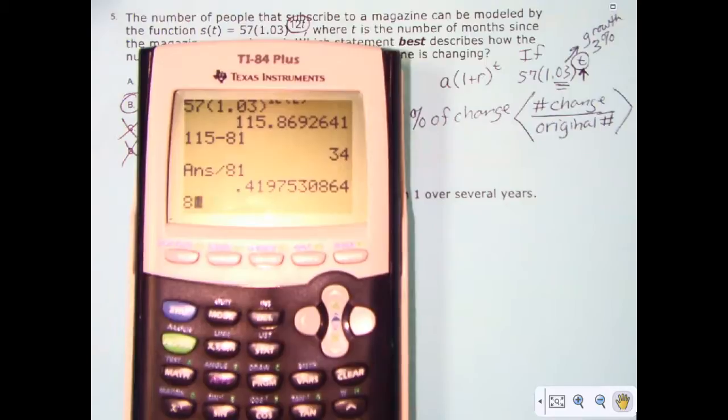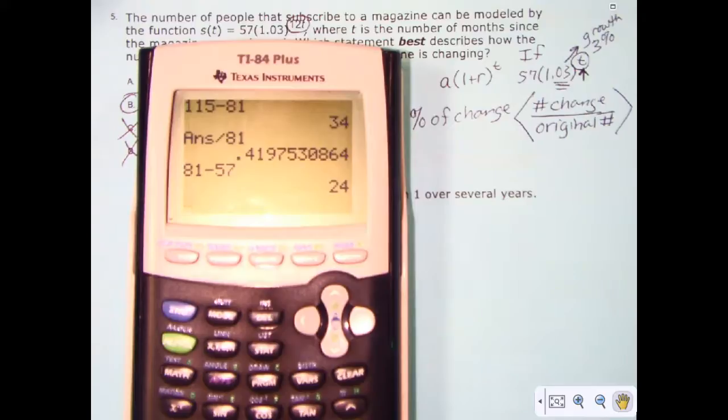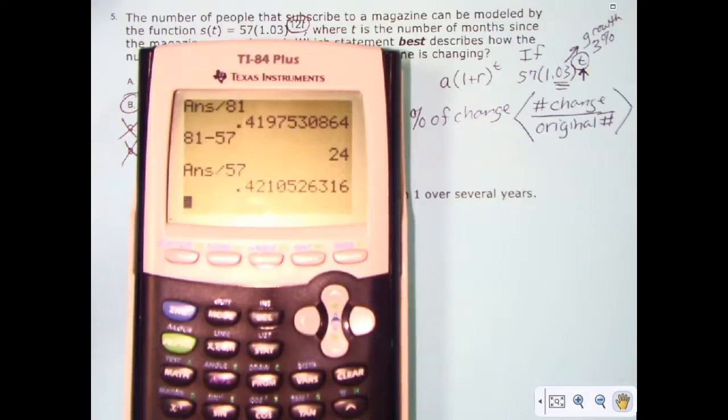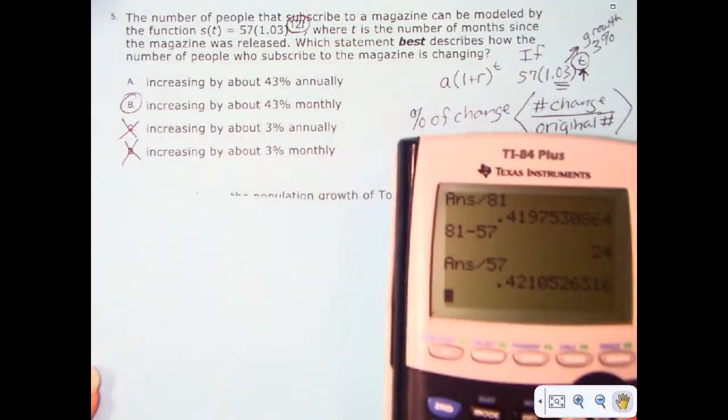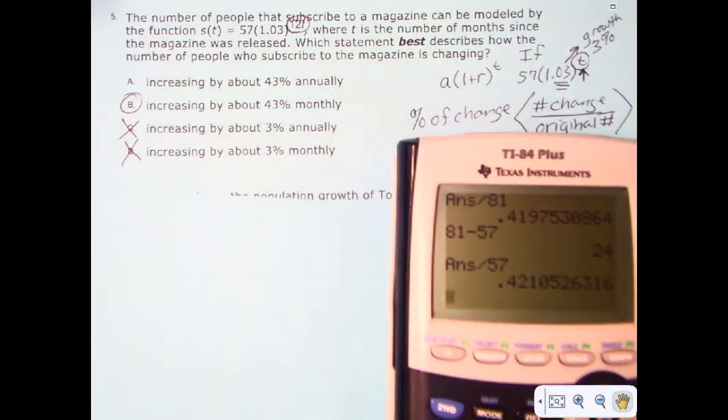If I took the 81 and subtracted the 57, I would get 24. And what did I start with? I started with 57, so I would divide that by 57, and I would get 42 again, because it has an average percentage of increase of 42%, which is about 43, and remember that you're always choosing the best answer.